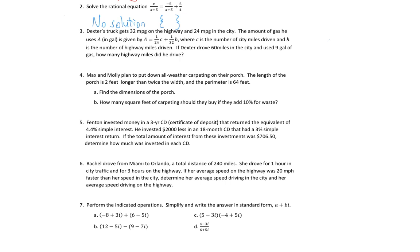Next we have a word problem. Dexter's truck gets 32 miles per gallon on the highway and 24 miles per gallon in the city. The amount of gas he uses, A, is given by A equals 1 over 24 times C plus 1 over 32 times H, where C is the number of city miles and H is the number of highway miles. If he drove 60 miles in the city and used 9 gallons of gas, how many highway miles did he drive? We're looking for H. We're given C and A, so I can plug those into my equation: 9 equals 1 over 24 times 60 plus 1 over 32 times H.